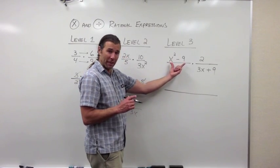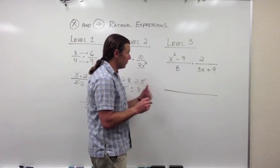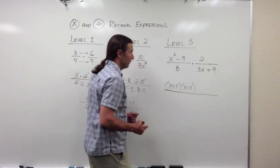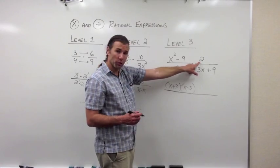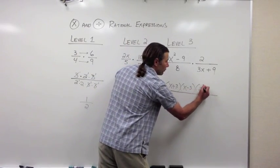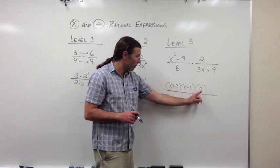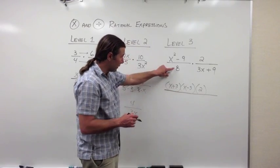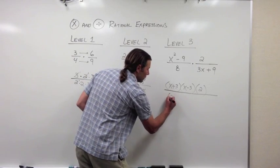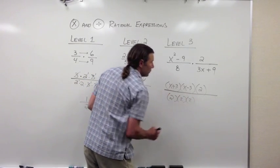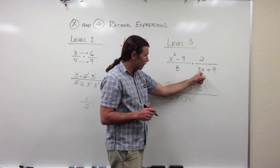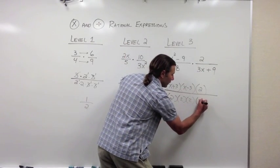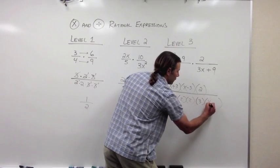Starting with x squared minus 9 — that is the difference of squares, so it factors into (x + 3)(x − 3). Continuing across the numerator, I have times 2, which is prime, so I'll write that as (2). Going across the denominators: 8 factors as 2 times 2 times 2. Then 3x plus 9 has a greatest common factor of 3, so I'll pull that 3 out front — and factoring gives me 3 times (x + 3).